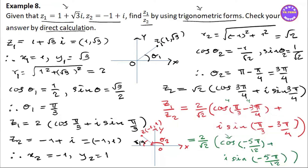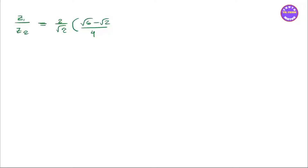Here we have minus 5, shift, eXV, and 5. We have 12. We have to write down root 6 minus root 2 by 4. Now we have to write down the second.